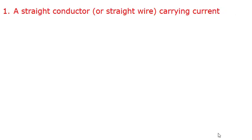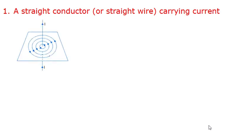Let us first study a straight conductor carrying current. The magnetic field lines around a straight conductor carrying current are concentric circles whose centers lie on the wire, as shown in the figure. When the current is flowing from the bottom end to the top end in a straight wire, the magnetic fields are circular in shape and the direction is anticlockwise. You can do an experiment: take a cardboard, make a hole in the center, pass a wire and flow current from bottom to top. Sprinkle some iron filings then gently tap the cardboard. You will find that the iron filings arrange themselves in concentric circles.